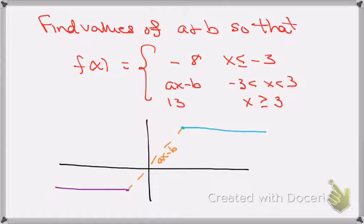Many of you have asked me the same question from your homework, and so you're asked to find the values of a and b so that this piecewise function f of x is equal to minus 8 when x is less than or equal to minus 3.